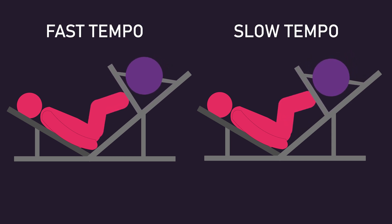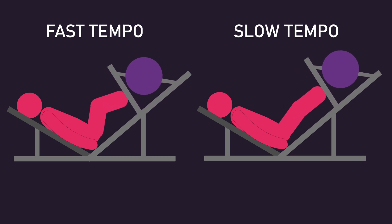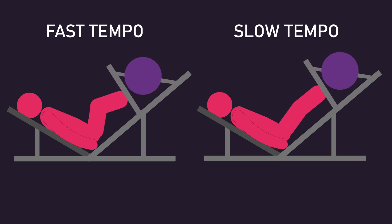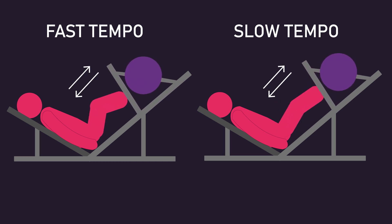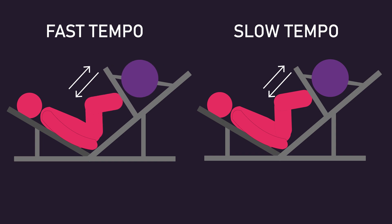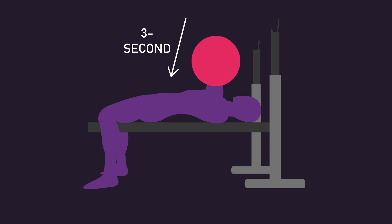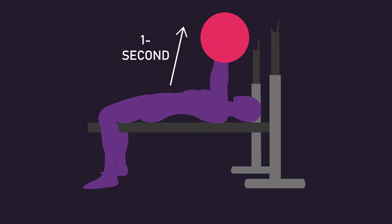Repetition tempo is probably one of the least thought about variables in a muscle building program. Repetition tempo refers to the duration you perform the various muscle actions in an exercise. For example, you could perform an exercise with a 3-second eccentric phase, a 0-second isometric, and a 1-second concentric phase.